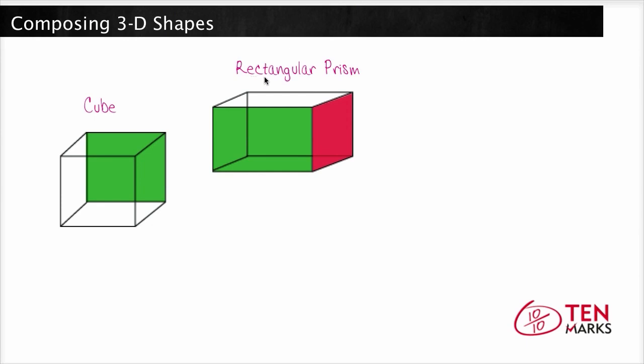This is a rectangular prism. This side in green is a rectangle, and this side is a square.